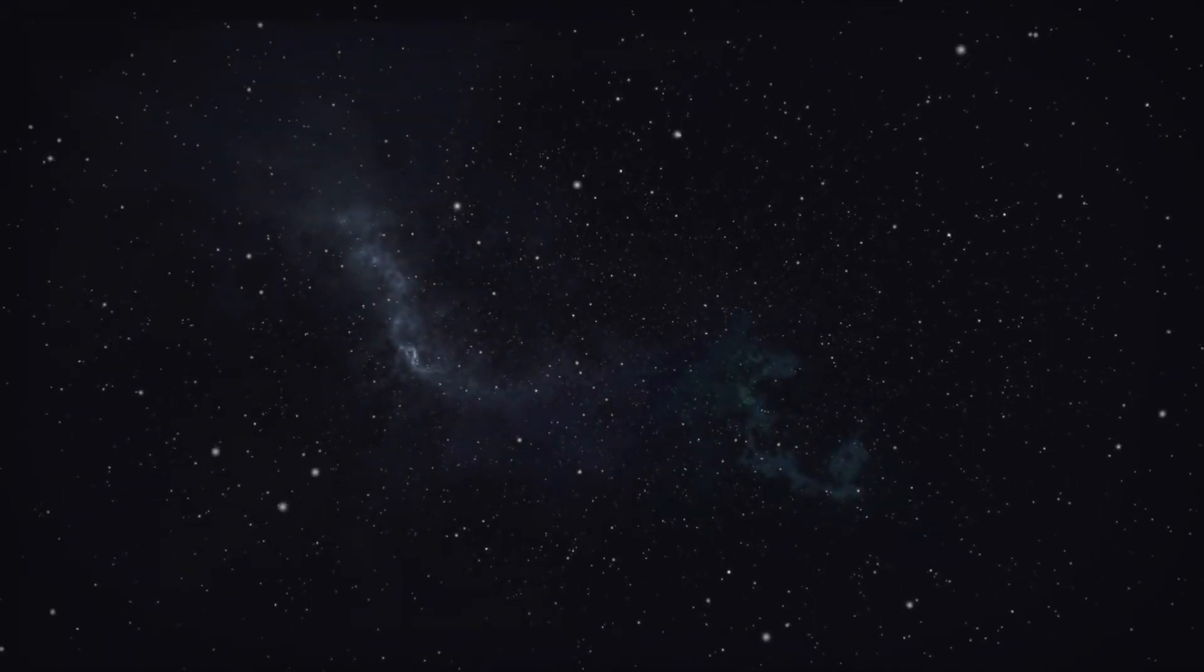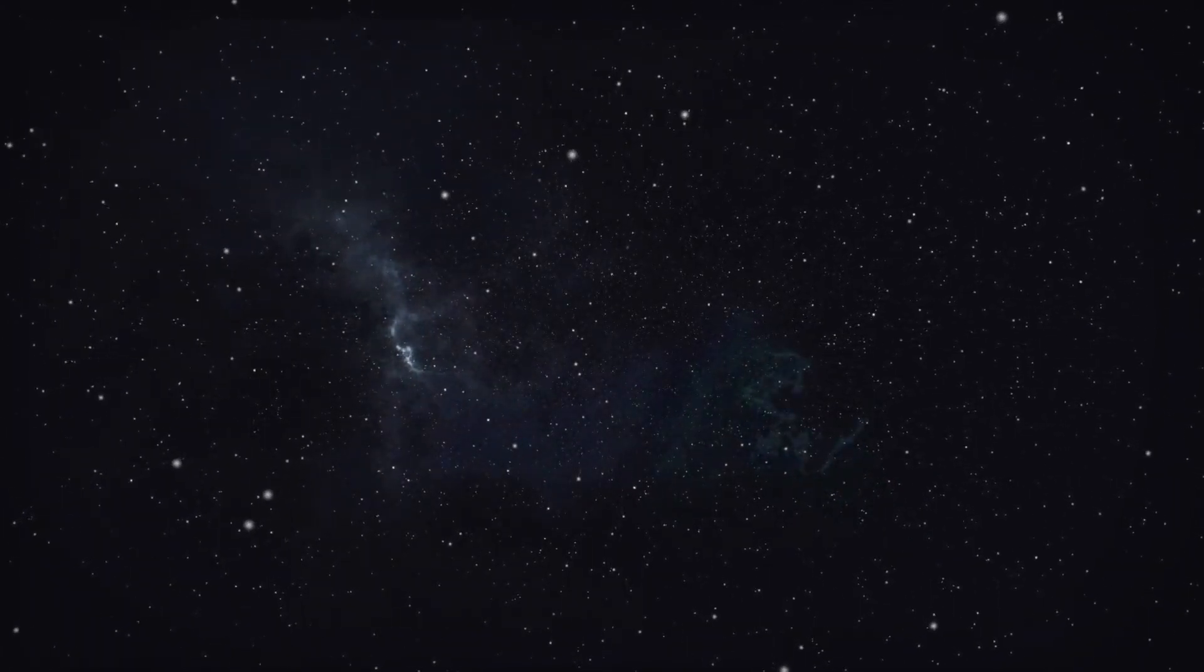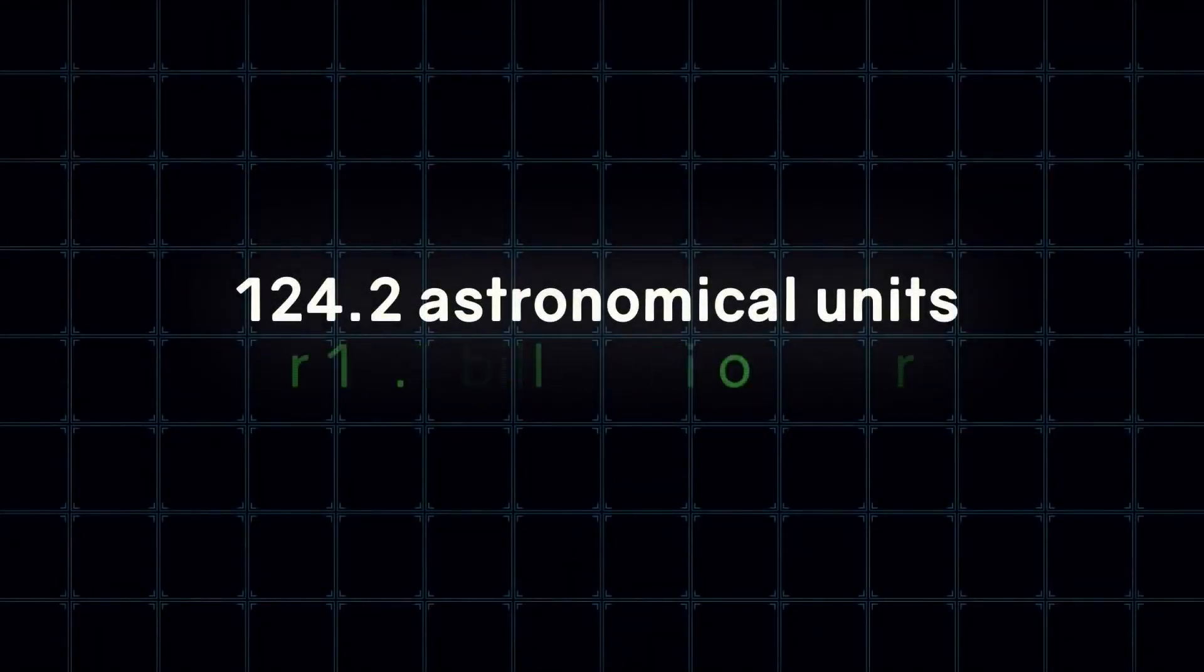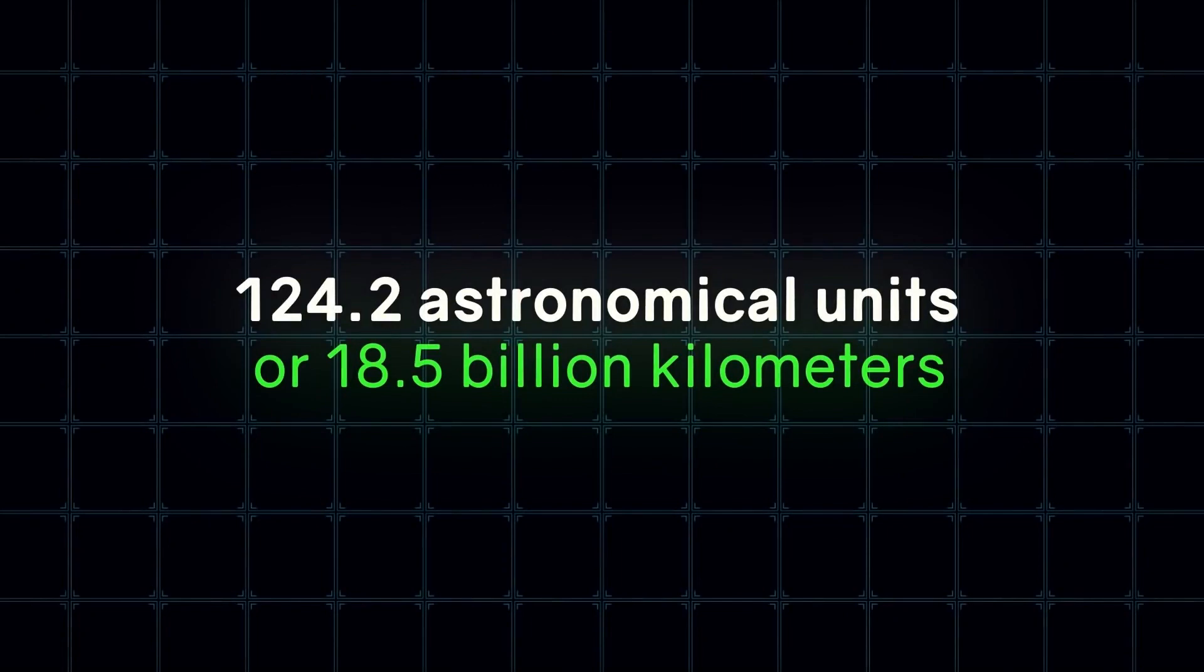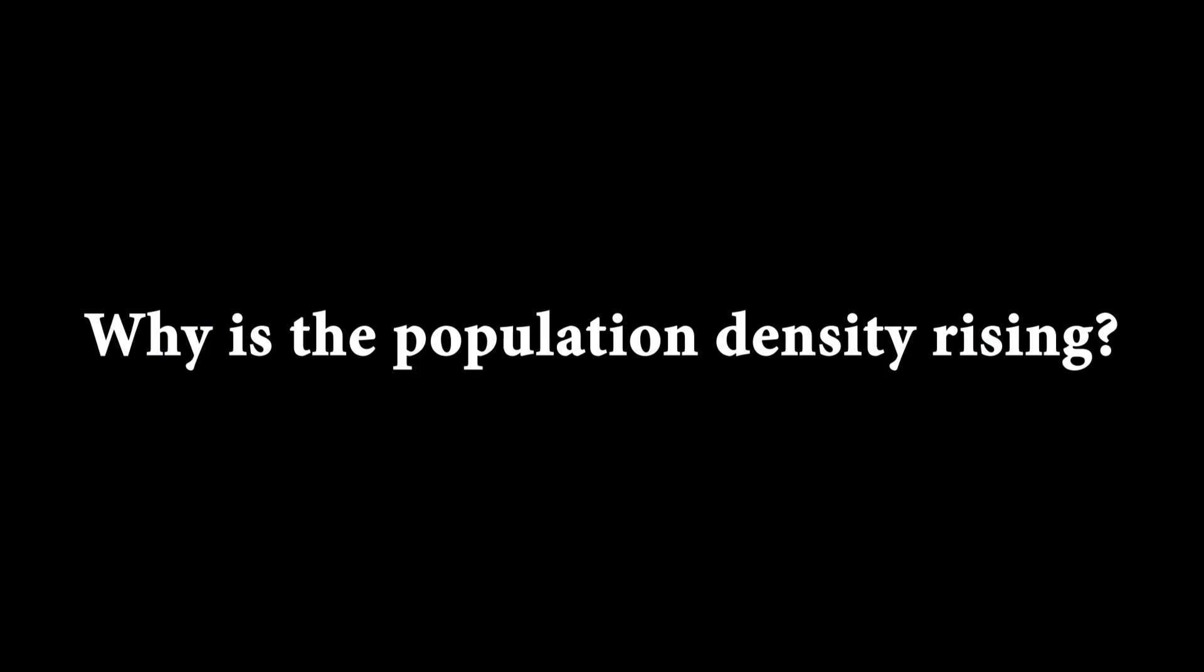The weirdness began when the density was 0.12 particles per cubic centimeter at a distance of 124.2 astronomical units, or 18.5 billion kilometers. Why is the population density rising? We'll get to that later, but for now, let's talk about another bubble.